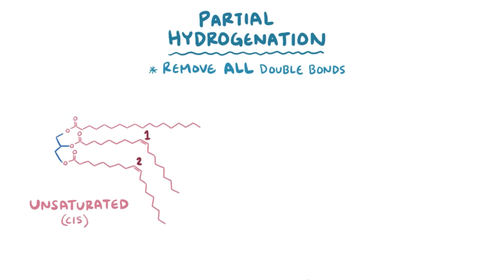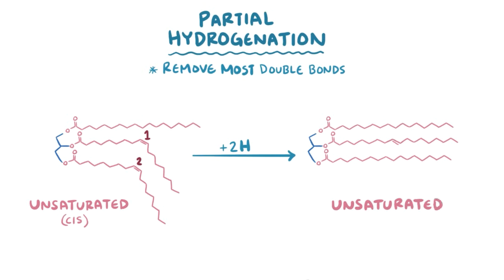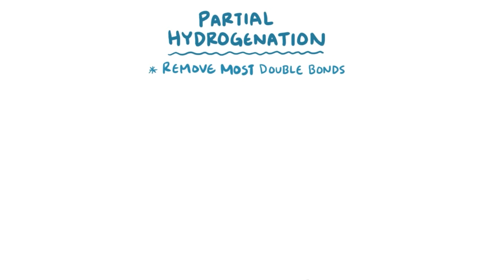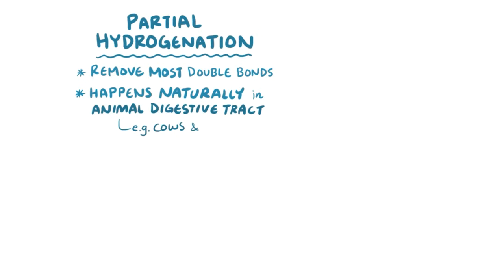Partial hydrogenation, on the other hand, refers to adding hydrogens to most but not all double bonds. When this happens, some double bonds can be turned into single bonds, but then they might reform, and what you end up with is an unsaturated fat where some of those fats have trans double bonds. Partial hydrogenation also happens naturally in the digestive tract of some animals like cows and pigs, which is why trans fats can be found naturally in meat and dairy products.